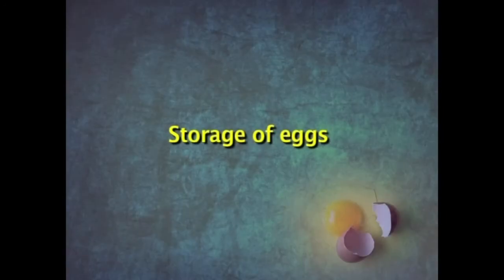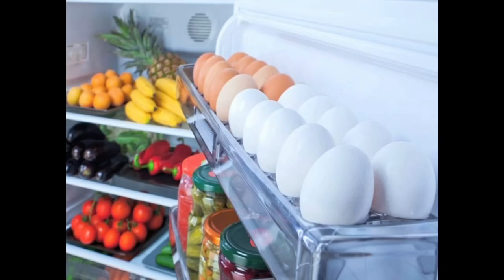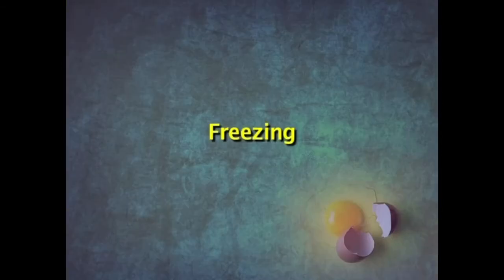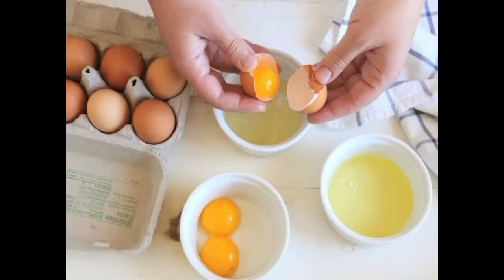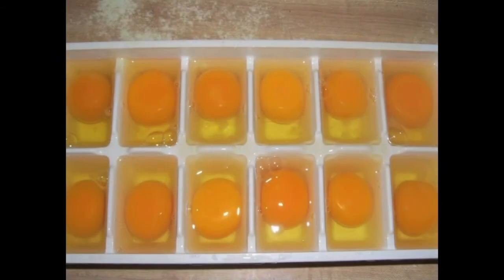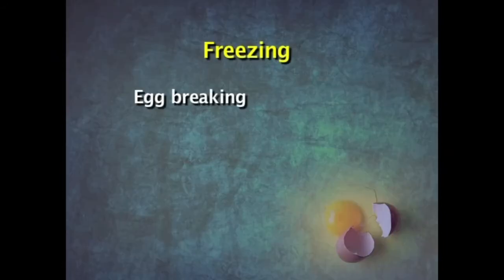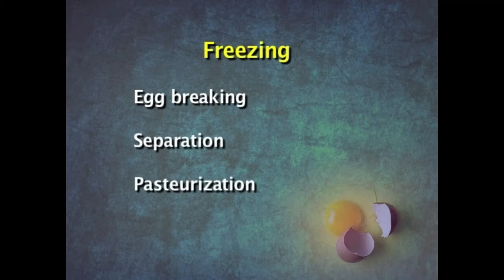Coming to the storage of eggs. Normally, for home storage, eggs can be stored in a refrigerator in closed containers. However, commercially there are different ways in which eggs can be stored. The first is freezing. Before eggs can be frozen, the egg is first broken. The steps involved in freezing are egg breaking, separation, pasteurization and then freezing.